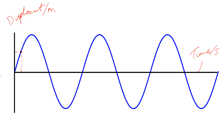We can see the wave oscillating around the zero point — the equilibrium or undisplaced position. If the sea were perfectly level with no wind and no waves, this is the level it would take. But because we have a wave, it goes higher and lower over time. The displacement is how far we are from this equilibrium point at any given time.